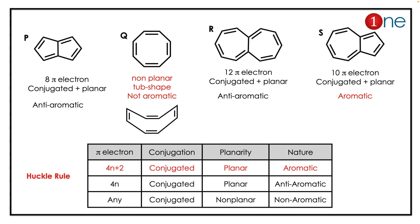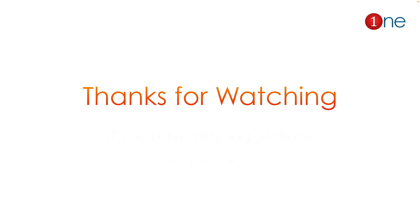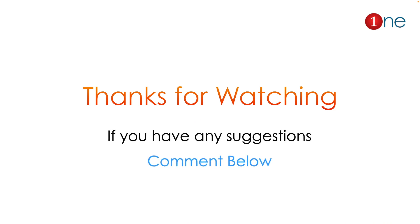Looking at S, the seven-membered and five-membered fused system has continuous conjugation with 10 pi electrons. Since 10 satisfies 4n+2 (where n=2), it is the aromatic system. So compound S is aromatic. The key concept here is Hückel's rule — you must count the pi electron conjugation and check planarity to identify the aromatic system.